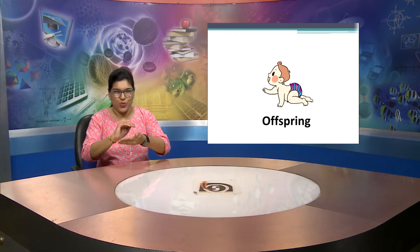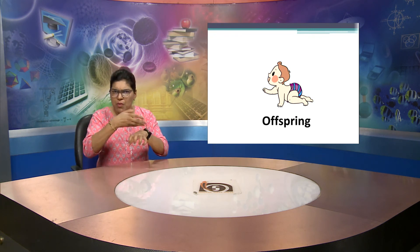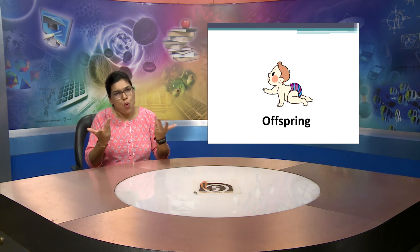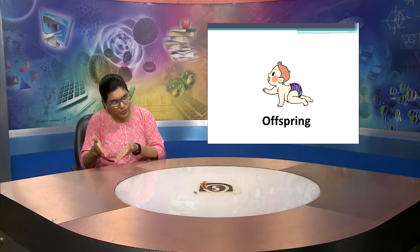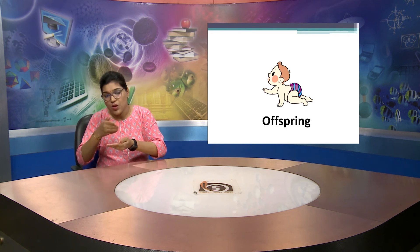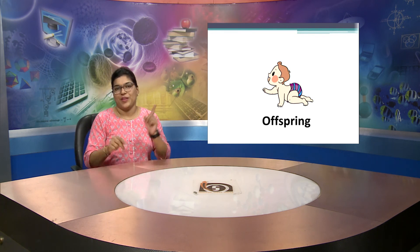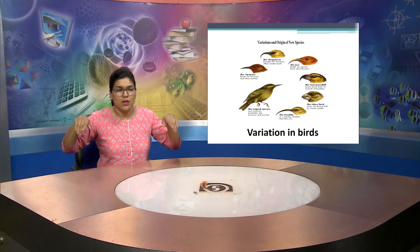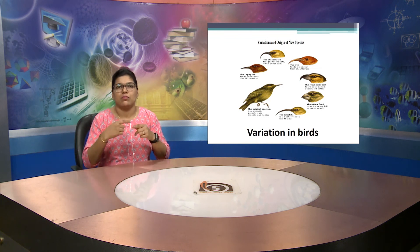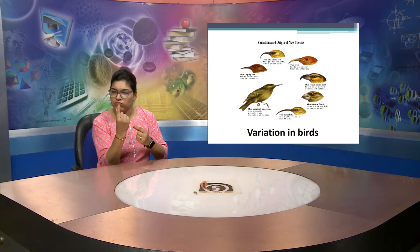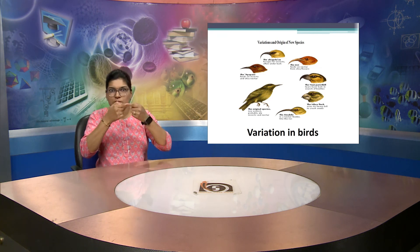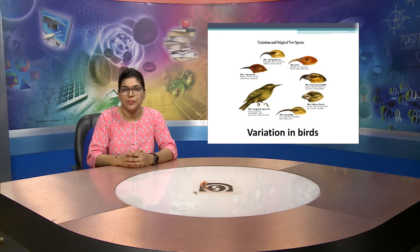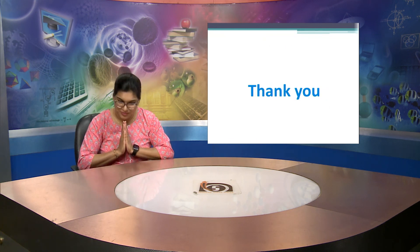The next word is offspring. It means baby. All animals have babies, birds also have babies, and we humans also have babies. So all animals on earth have babies, and this word is used for that meaning. The next word is variation in birds. Variation means something different among all the members of a group. On screen you can see different birds having different kinds of beaks. Thank you. Namaste.